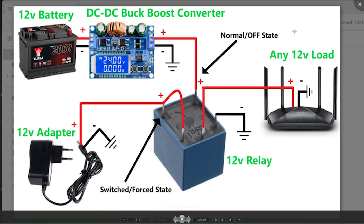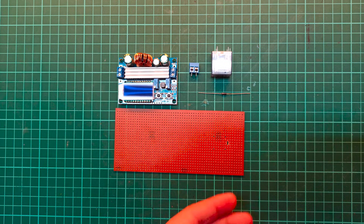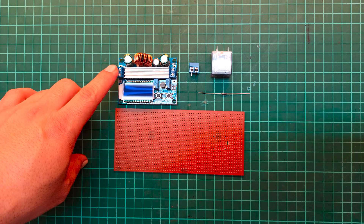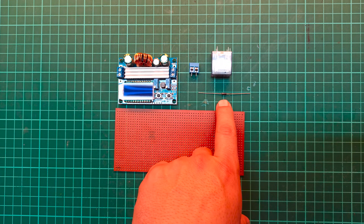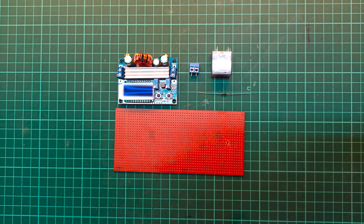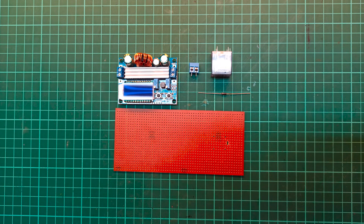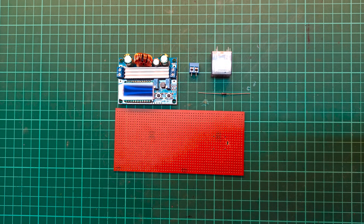Now let's move to designing the circuit — the prototype version on the Vero board. For designing the circuit, we only need a very few components. The first one is this DC to DC buck-boost converter, but you can replace this model with any other model that suits your circuit. Also needed are a Vero board, a 1N4007 diode, a 2-pin block connector, and a 12 volt relay. I am now going to quickly design the circuit on this Vero board and you will be able to see it in fast-forward mode.